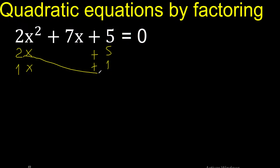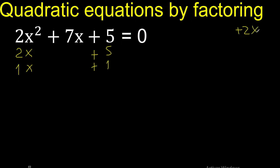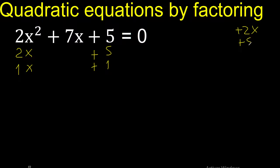2 multiplied by plus 1 is plus 2, then 1 multiplied by plus 5 is plus 5. That gives us 7.